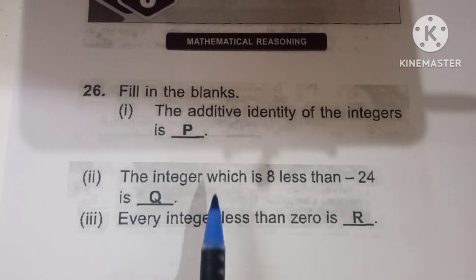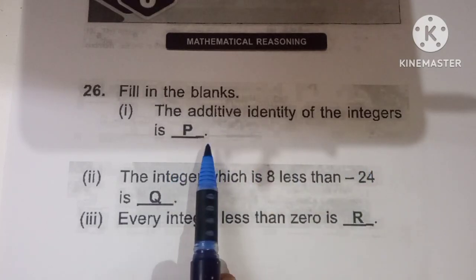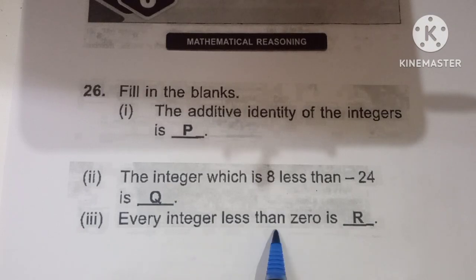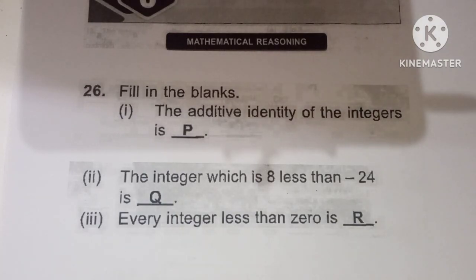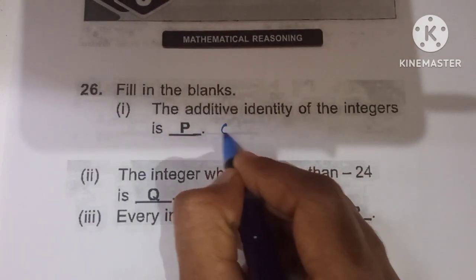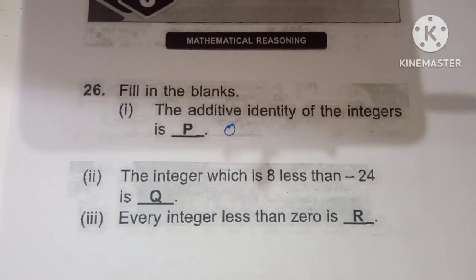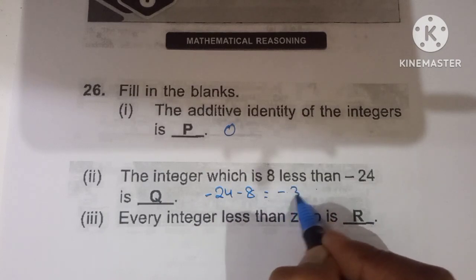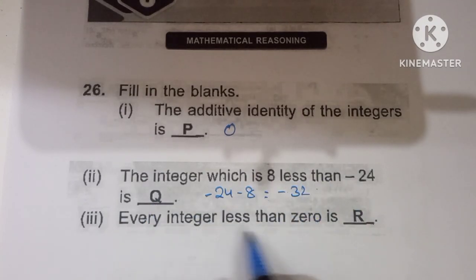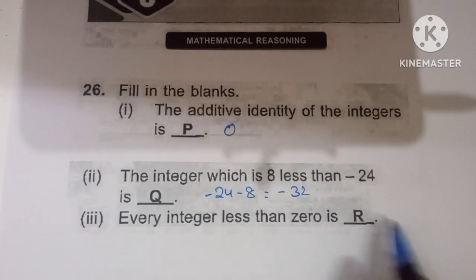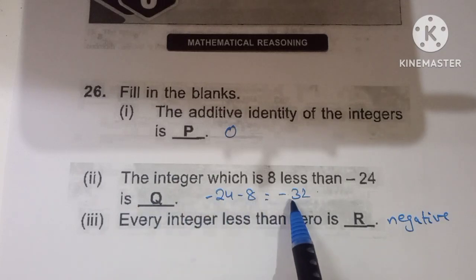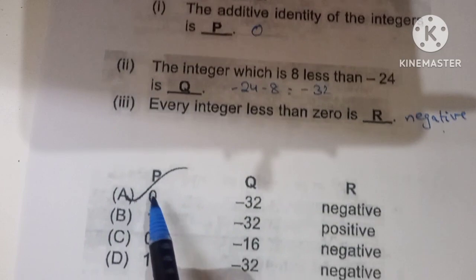Twenty-sixth question — fill in the blanks. P: the additive identity of integers is 0. Q: the integer 8 less than minus 24 is minus 24 minus 8, which is minus 32. R: every integer less than 0 is negative. So P is 0, Q is minus 32, R is negative. Option A is the correct one.